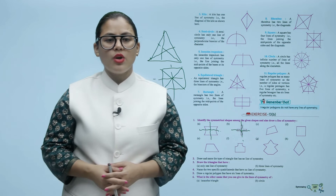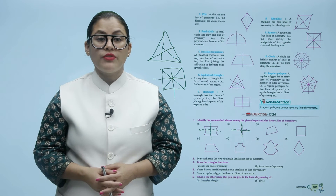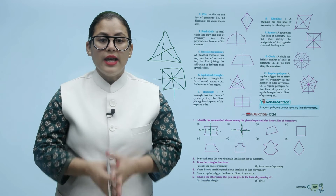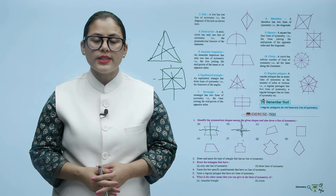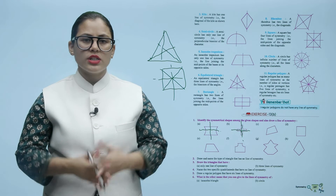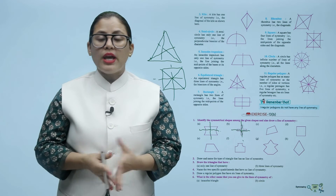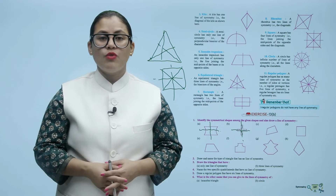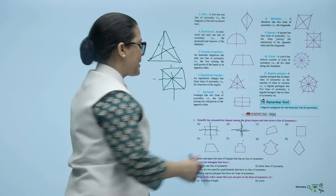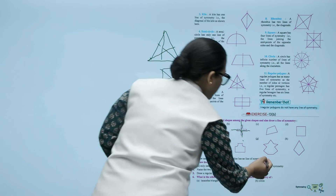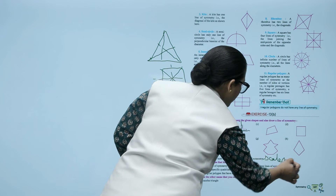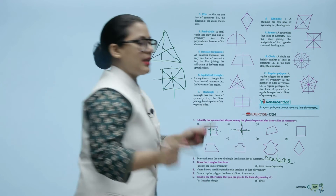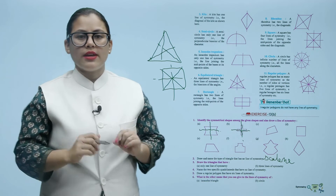Question number 2: Draw and name the type of triangle that has no line of symmetry. A scalene triangle has no line of symmetry because its three sides are not equal.